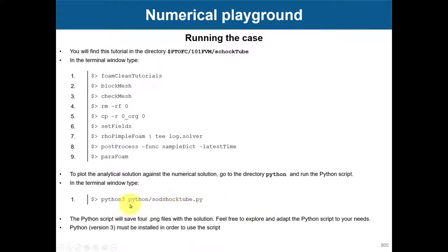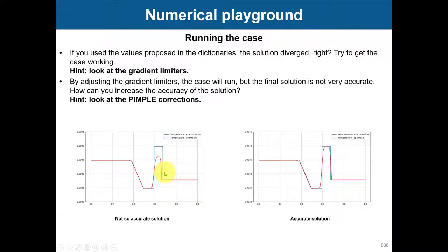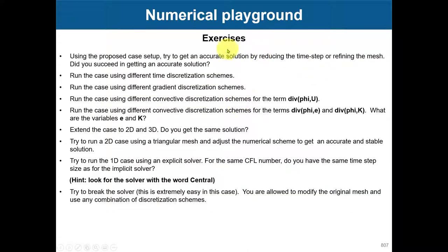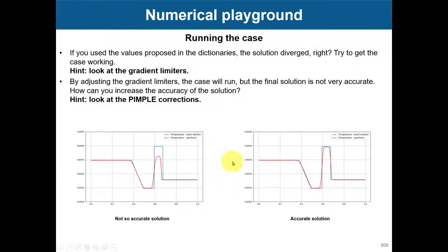There is a Python script in the folder where you can compute the analytical solution and compare it with OpenFOAM. With the default setup you'll get some output where there is a visible difference — the discontinuities are partially resolved but you're missing information. What we want is a more accurate result, and we'll discuss how to get there during the Q&A session.